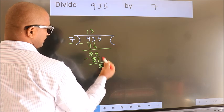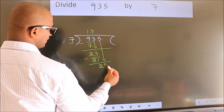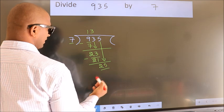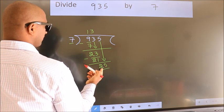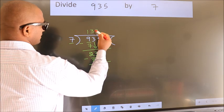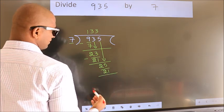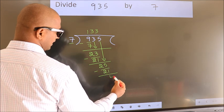After this, bring down the beside number. So 5 down, so 25. A number close to 25 in 7 table is 7×3=21. Now we subtract. We get 4.